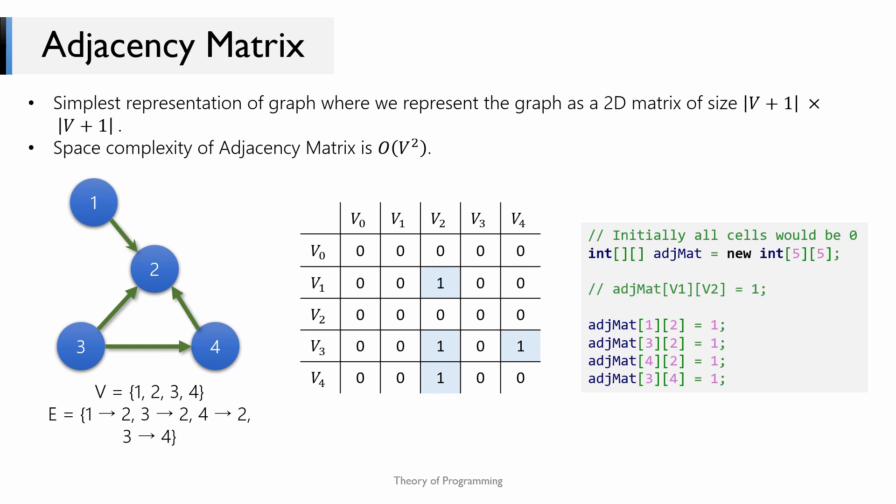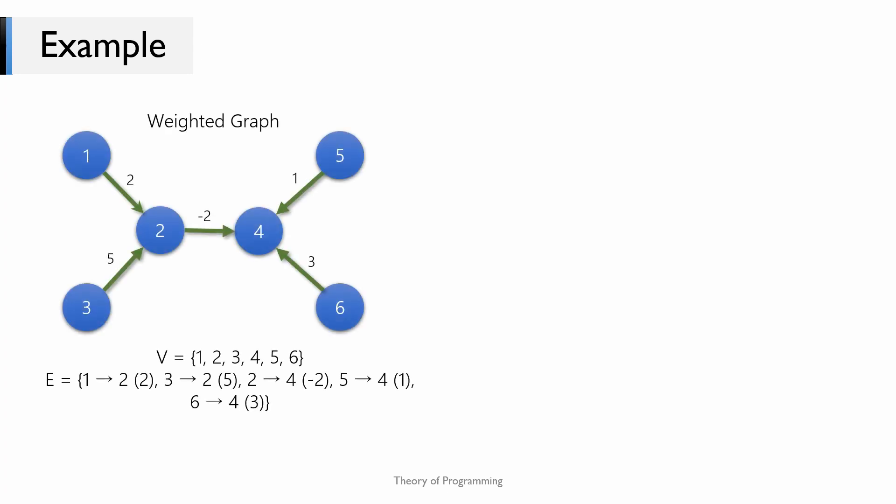The space complexity of the adjacency matrix is O(V²). This is because no matter how many edges there are, your memory consumption would still be that 2D array of size V+1 × V+1, which makes the space complexity O(V²).